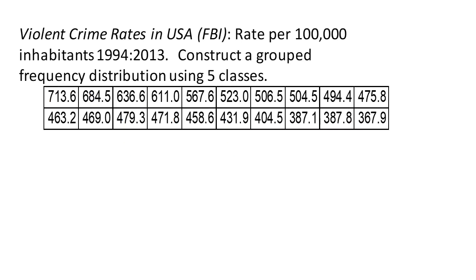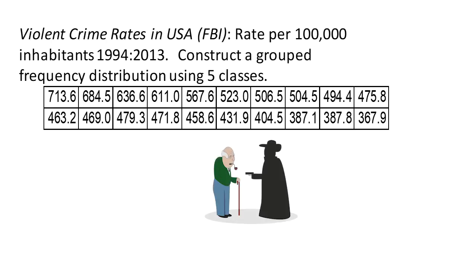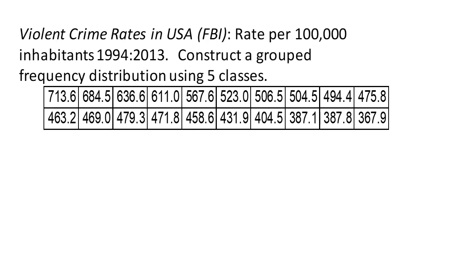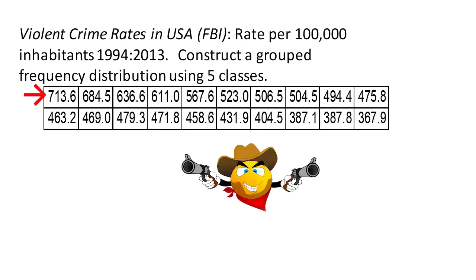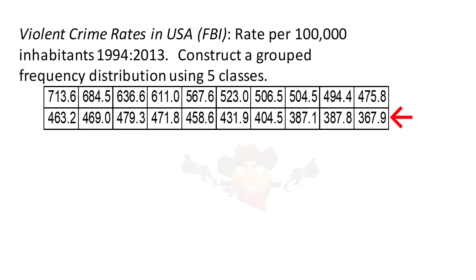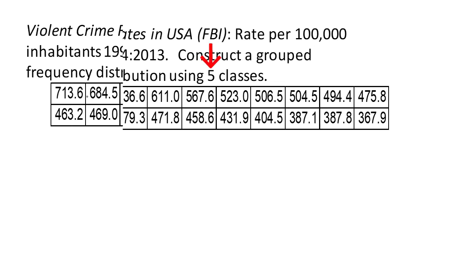This data shows the rate of violent crime in the United States per 100,000 inhabitants from the year 1994 — that's the first data point, 713.6 — to the year 2013, the last data point, which is 367.9. We're asked to construct a grouped frequency distribution using five classes.